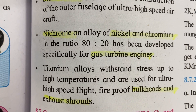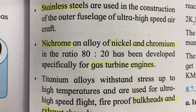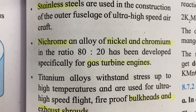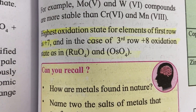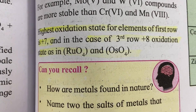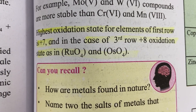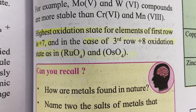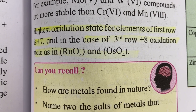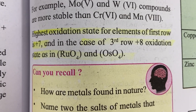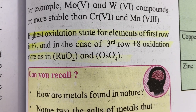The highest oxidation state for elements of the first row is +7 in the case of manganese. In the case of the third row, the highest oxidation state is +8, as seen in ruthenium (Ru) and osmium (Os).